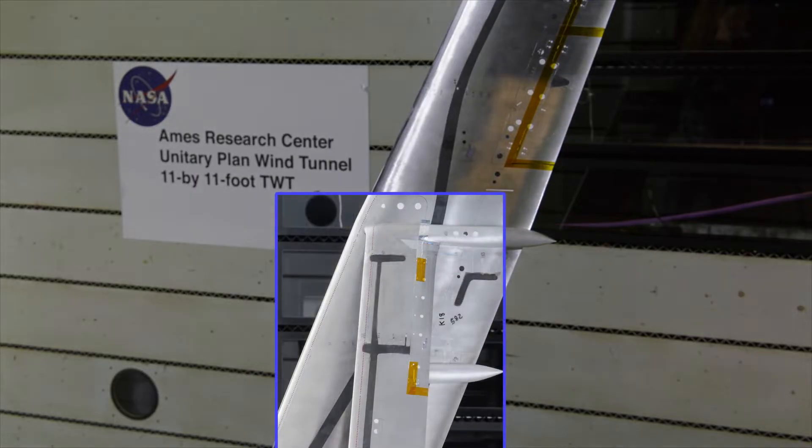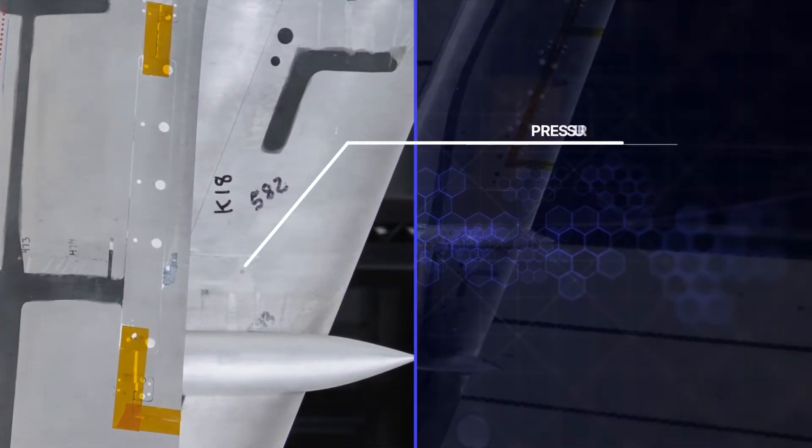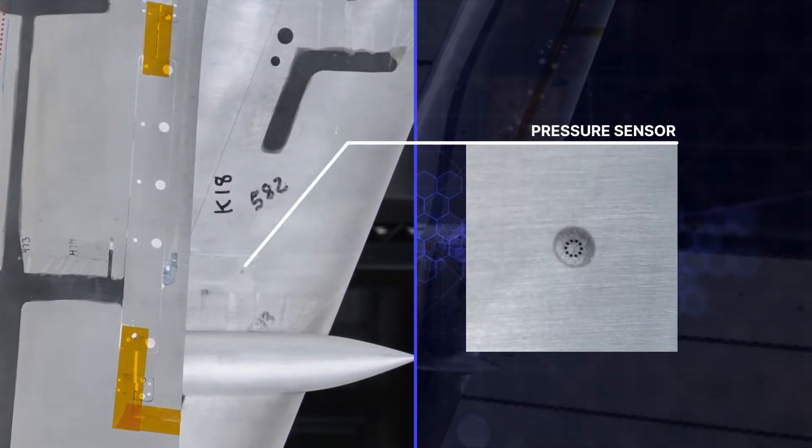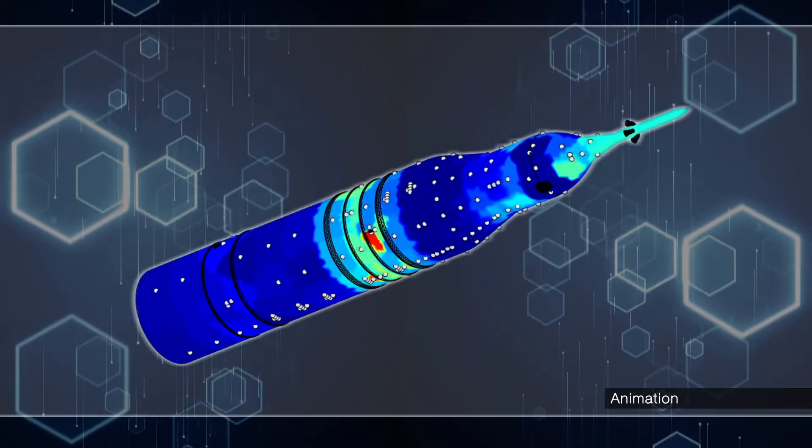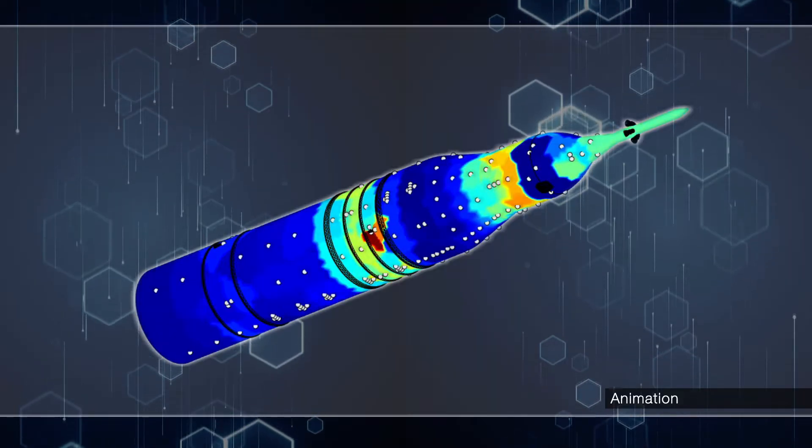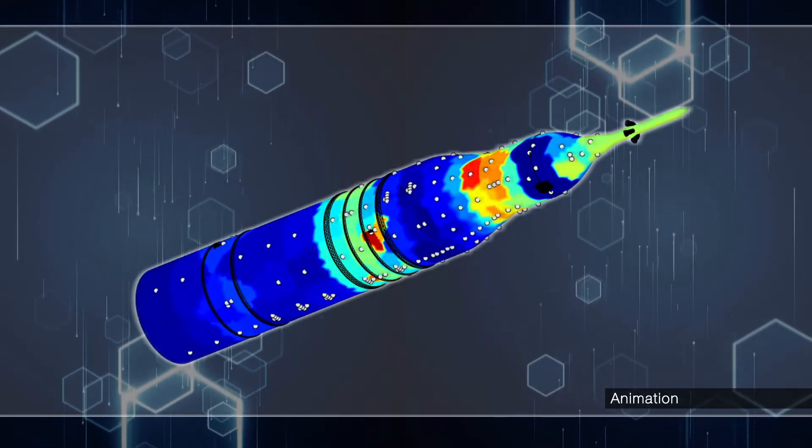Current wind tunnel methods measure air pressures on models with a limited number of strategically placed sensors. After tests are completed, data from each sensor point is assigned to its surrounding area to fill in the gaps.